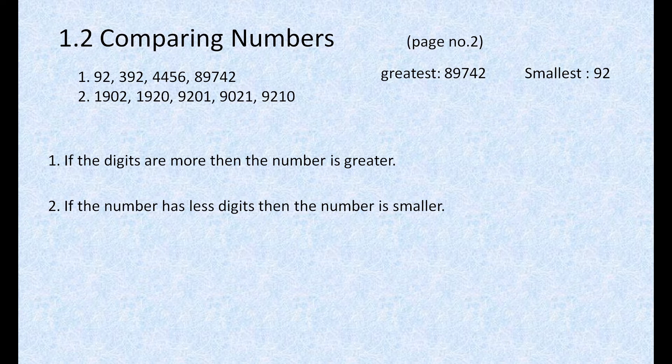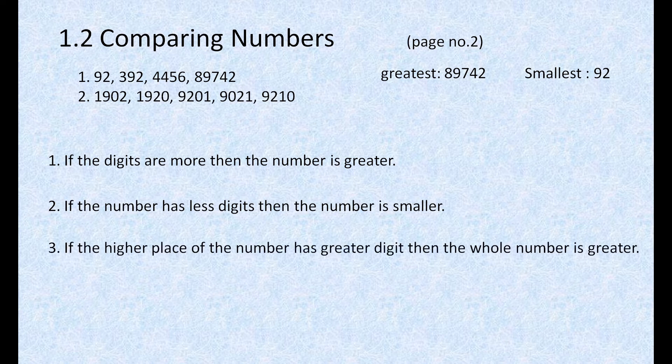So, what do we have to do? We have to use the third rule. The third rule says that if the higher place of the number has the greater digit, then the whole number is greater. On the higher place, whichever number is there should be the greater number.